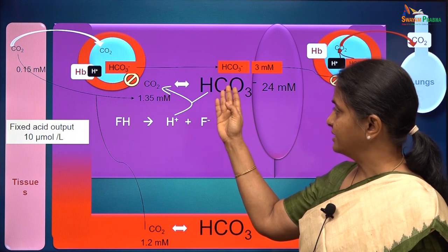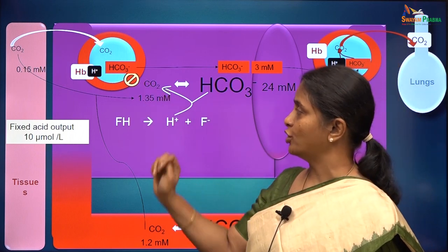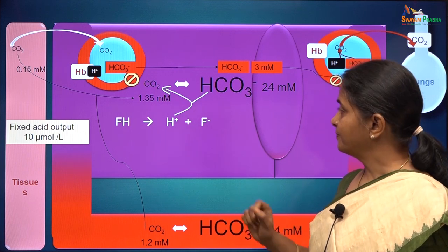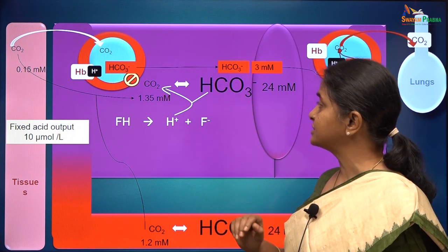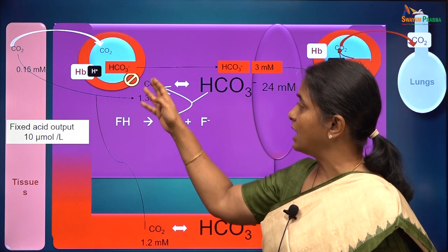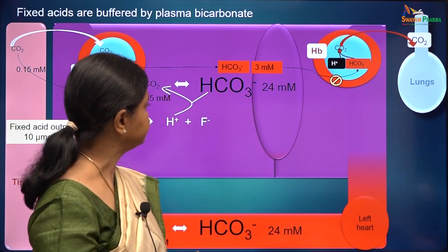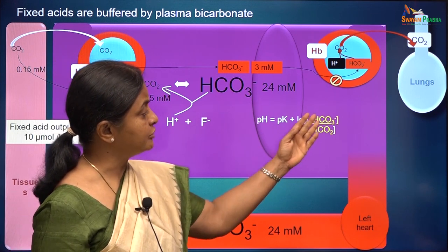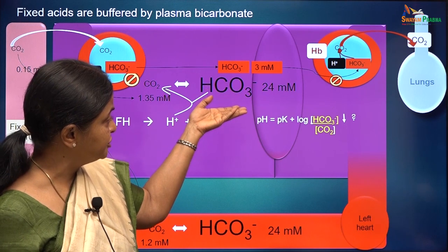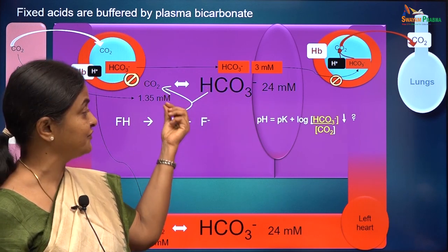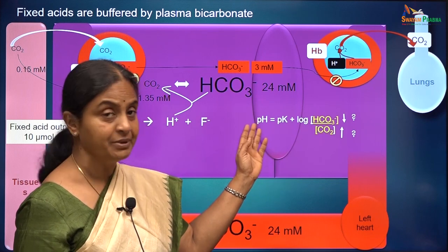The protons are buffered by bicarbonate. They bind together and the reverse reaction occurs so as to give carbon dioxide and water. Now you would ask: will consumption of bicarbonate by the protons from fixed acids reduce bicarbonate concentration, and will the formation of new carbon dioxide increase carbon dioxide concentration? If you remember, pH = pK + log (bicarbonate / carbon dioxide concentrations). So the question is, will bicarbonate concentration reduce and will carbon dioxide concentration increase? If either or both of these events happen, then the pH would reduce.